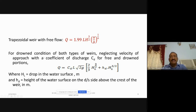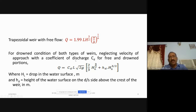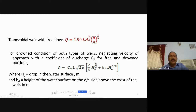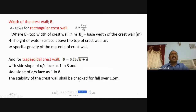For the drowned or submerged condition for both rectangular and trapezoidal types of weir, neglecting the velocity of approach, the discharge Q = C_D · L · √(2g) · [2/3 · H_L^(3/2) + H_D · H_L^(1/2)], where H_L is the drop in water surface and H_D is the height of water surface on the downstream side above the crest of the weir in meters.